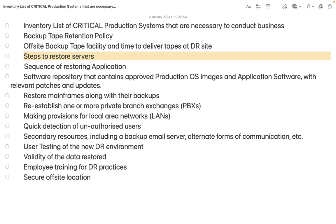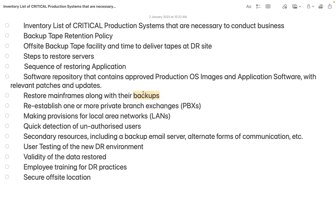Moreover, restore mainframes along with their backups. As I told you, if there are 10 applications out of which three are really critical and we need to restore the most important one first — as soon as the application goes live, there will be some customer data coming in. So we need to ensure backup of those applications as soon as these are live, whether it's real-time backup or whatever the policy of your organization is. Backup has to be enabled for those applications which are currently running at your DR — disaster recovery — site.